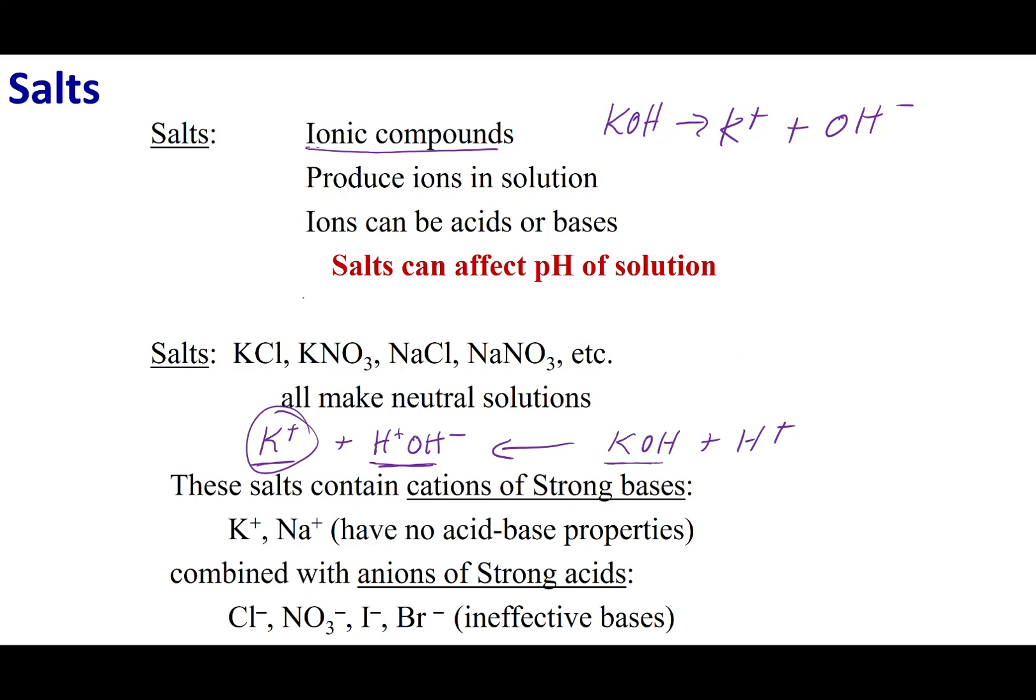I can do the same thing with Cl-. Cl- plus H+ OH-. And what I can do is I can say that the Cl- is going to combine with HCl and I'm going to get my OH-. And again, HCl is a strong acid. It is going to completely break up. And so the reaction is not going to make HCl. It wants to stay as Cl-. And so this is why these ions are going to be neutral in solution. They don't want to go to this other side making H+ and OH-. They want to stay as the ions and they want to stay as water.